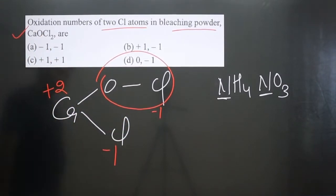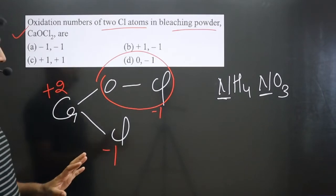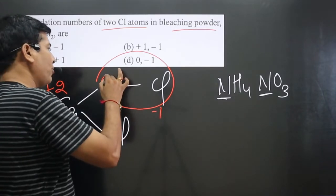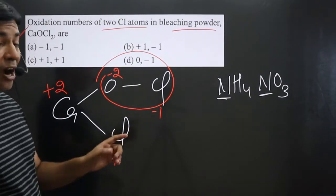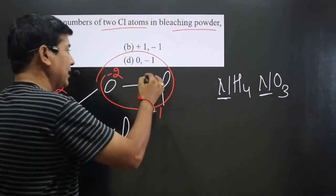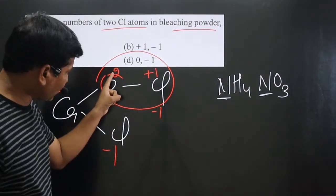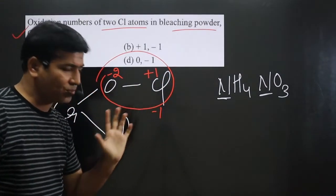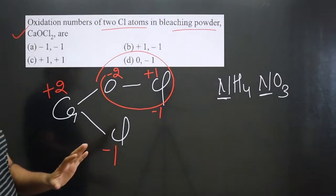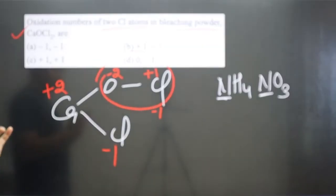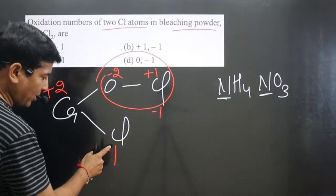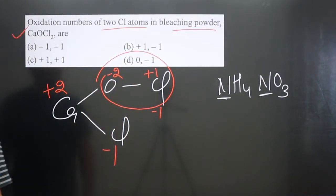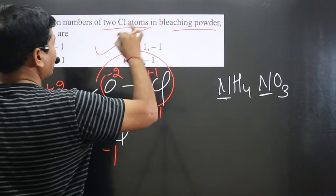Logically, we try to understand. Oxygen obviously is forming two bonds. It is supposed to have minus two oxidation numbers. How we can get minus one means this Cl is present in plus one. Minus two plus one is equal to minus one. So by drawing the structure only we can understand. One Cl is present in plus one oxidation number and another Cl is present in minus one oxidation number. Option B is correct.